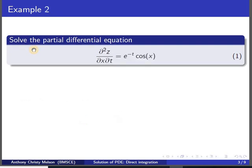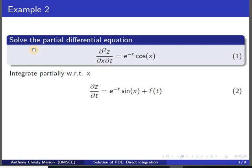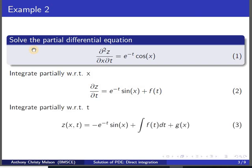Now we choose Example 2: ∂²z/∂x∂t = e^(-t)·cos(x). Here we choose to integrate partially with respect to x. This results in ∂z/∂t equal to e^(-t)·sin(x) plus a constant of integration with respect to x, which will be f(t). Integrating again with respect to t gives z equal to e^(-t)·sin(x) plus ∫f(t)dt plus the constant of integration with respect to t, which is g(x).